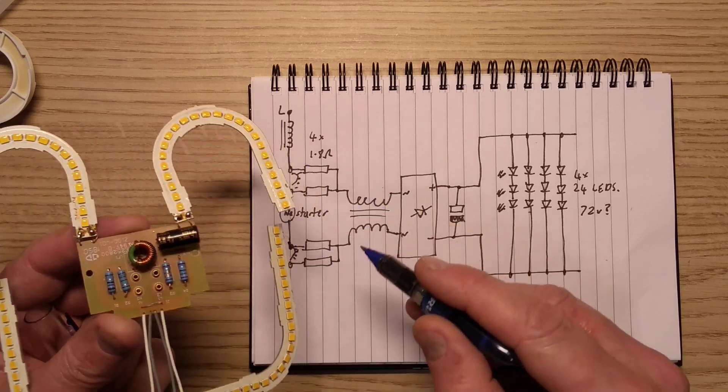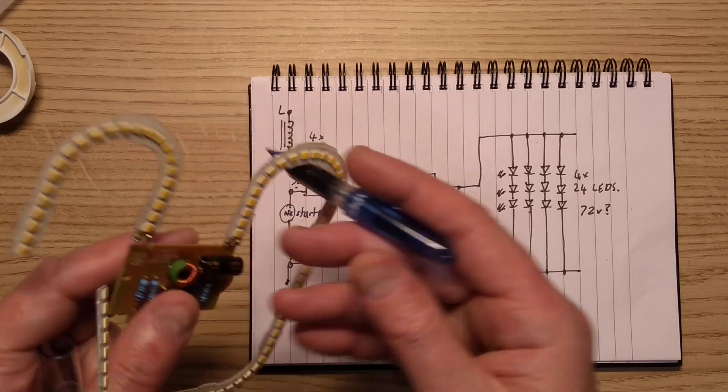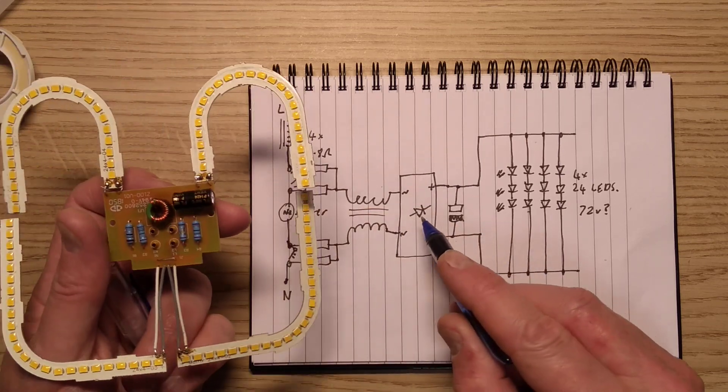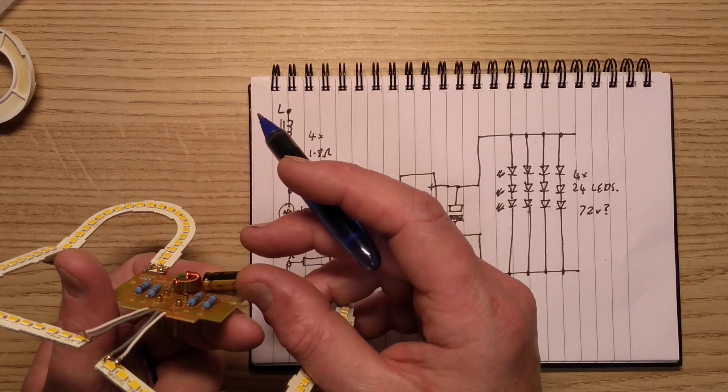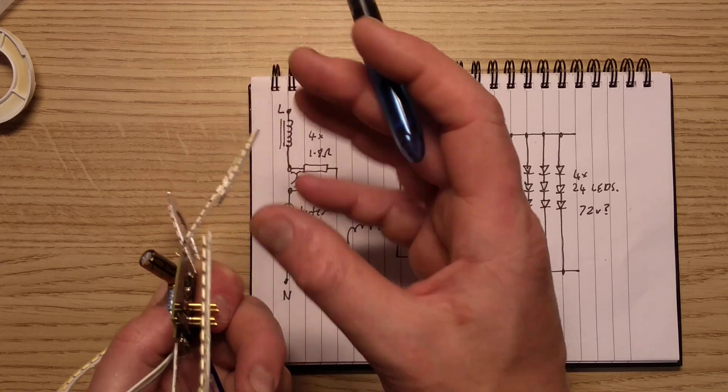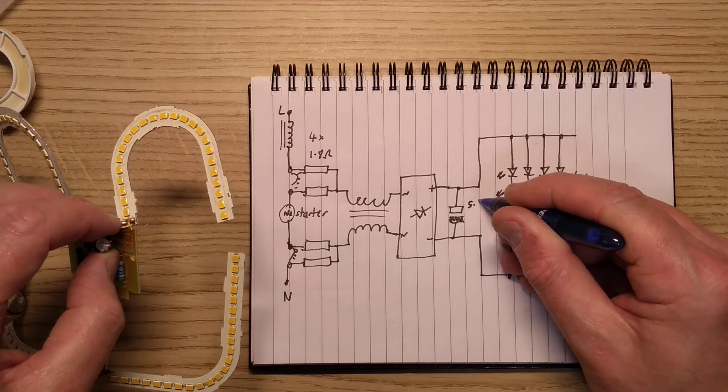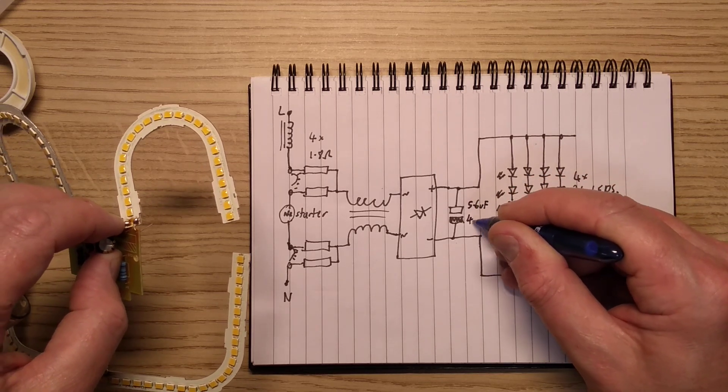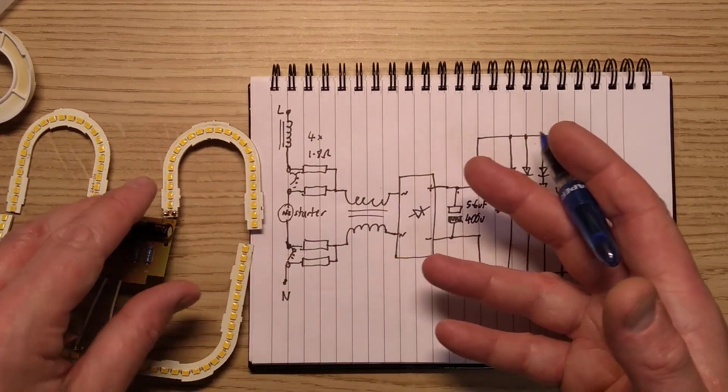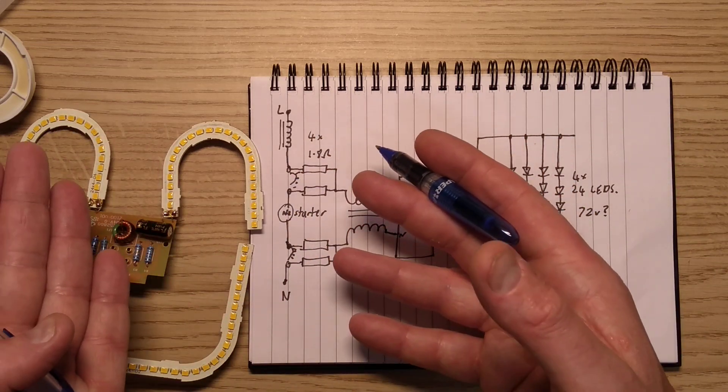Then comes a common mode suppression choke. The wires are coming from the pins through the resistors and then they go to the bridge rectifier which is on the back. That converts the AC to DC, then there's a smoothing capacitor to avoid ripple and flicker and it's rated 400 volts, 5.6 microfarad.